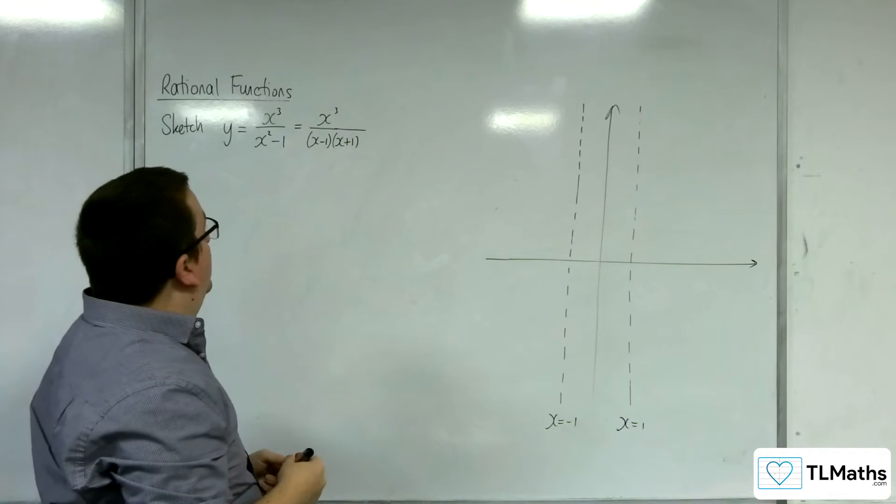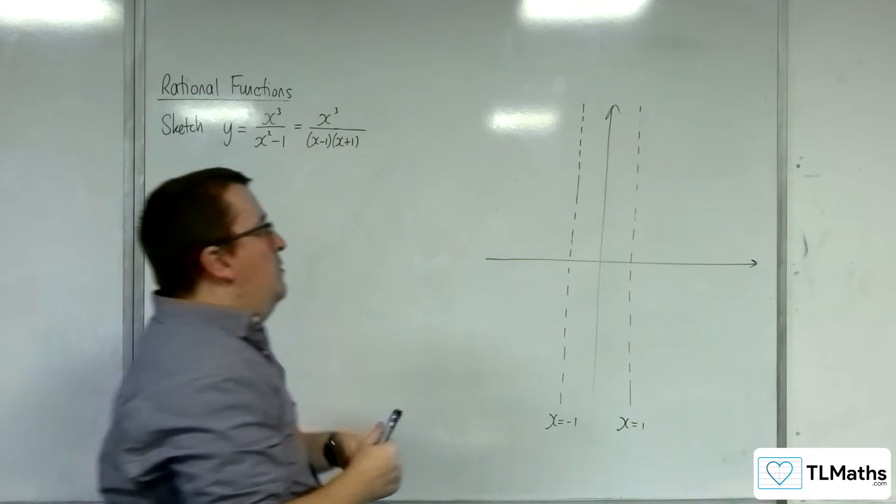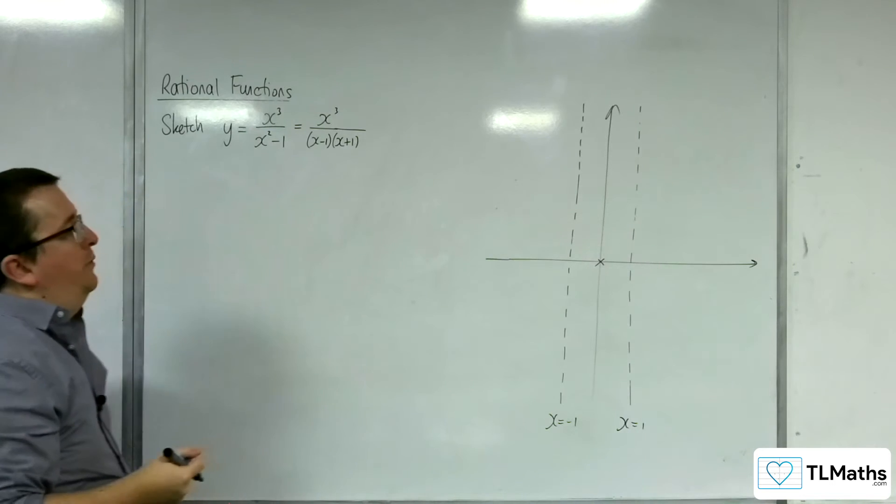How about where it crosses the x-axis? That's when the numerator is 0, which is when x = 0. So that also takes care of the y-intercept as well.